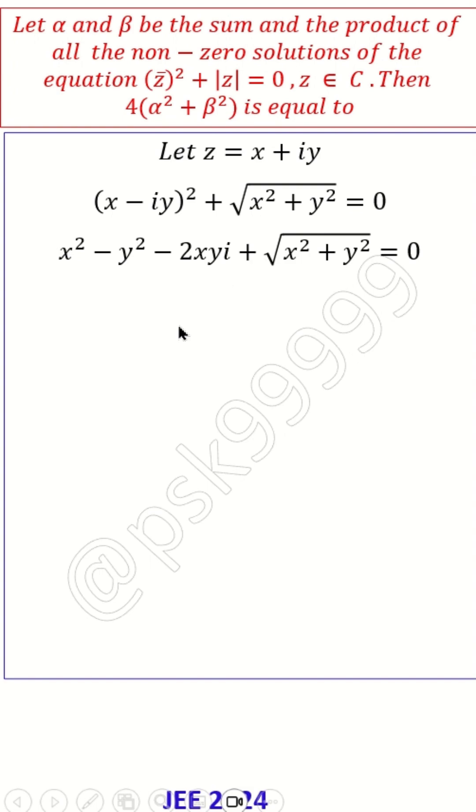So first you will take this one, this has to be zero. If I take 2xy = 0, which means either x = 0 or y = 0. So I have two conditions. Case 1: x = 0. When x = 0, my given equation will become -y² + |y| = 0.